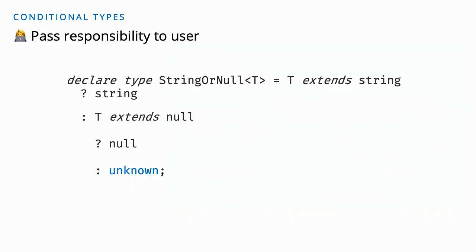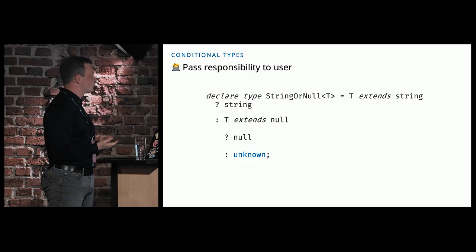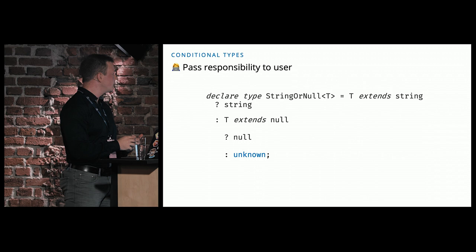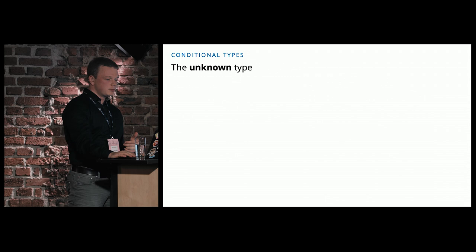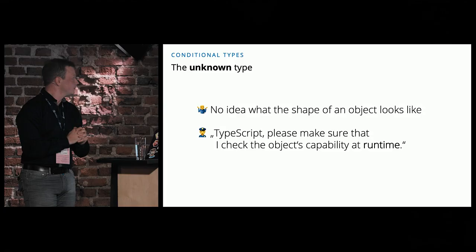The third path is to pass the responsibility back to the user. You can use another type introduced in TypeScript 3.0: the so-called unknown type. Generally speaking, unknown means: I have no idea what the shape of this object looks like, so please TypeScript make sure that I check the capabilities of the object at runtime. Unknown is something like the counterpart to any — any allows nearly everything, and unknown allows you nothing unless you have capability checks at runtime in place.